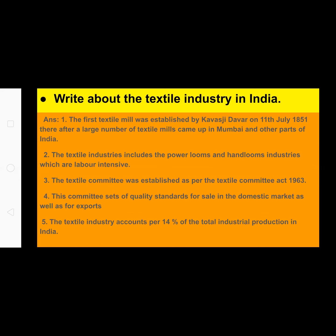Next example: write about the textile industry in India. The first textile mill was established by Kawaji Davar on 11th July 1851. Thereafter a large number of textile mills came up in Mumbai and other parts of India. The textile industry includes power looms and handloom industry, which are labor intensive. The Textile Committee was established as per the Textile Committee Act 1963. This committee sets quality standards for the domestic market as well as for exports. The textile industry accounts for 14 percent of total industrial production in India.